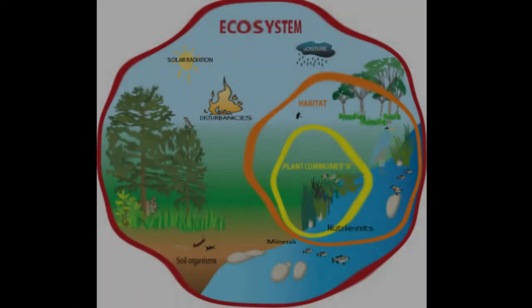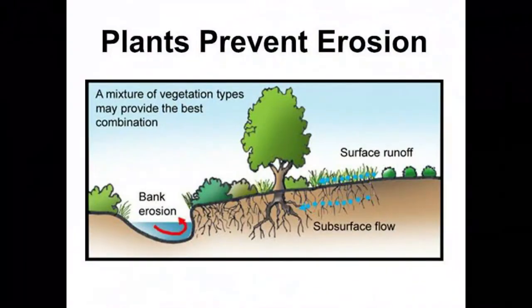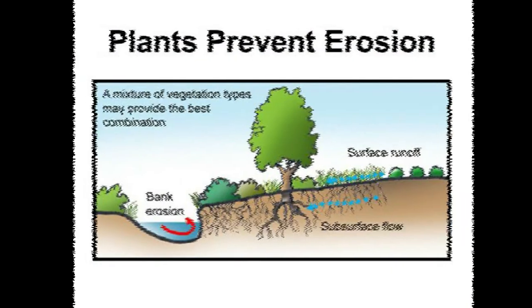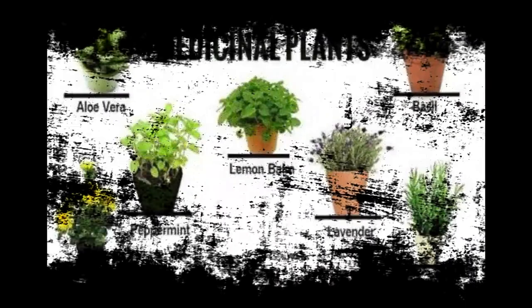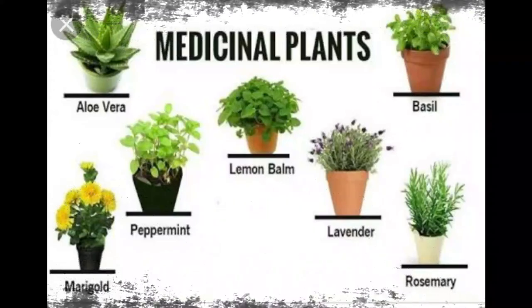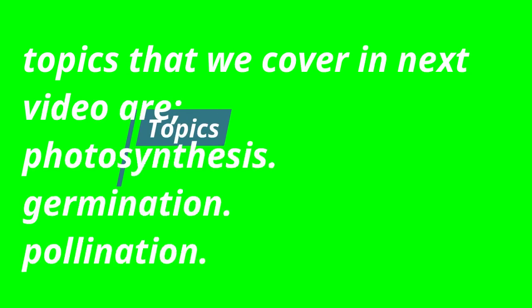Other uses of plants: balancing a good ecosystem, making life sustainable on Earth. Plants also prevent soil erosion by holding the soil tightly. Plants and trees also maintain the oxygen cycle. There are many medicinal plants used for curing diseases, such as the Tulsi plant.